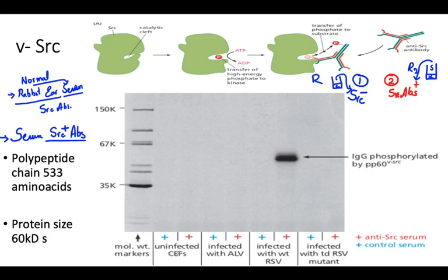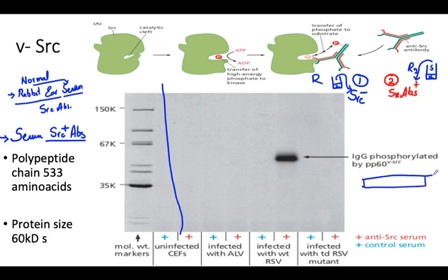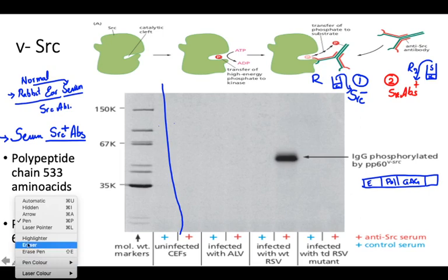We used chicken embryo fibroblasts that were uninfected — no band appears in either lane. Then we used Avian Leukosis Virus, which does not contain the SARC region — it has envelope gene, pol, and gag/capsid protein but no SARC region. Therefore Avian Leukosis Virus shows no band.